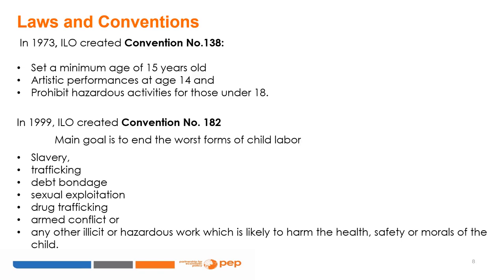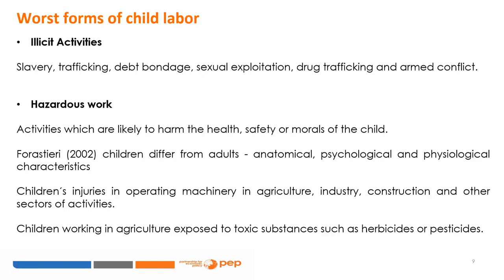Another important convention, ratified by all 187 countries that are members of the UN's International Labour Organization, was Convention No. 182, created in 1999. Its main goal was to end the worst forms of child labour around the globe, including slavery, debt bondage, sexual exploitation, the use of children in drug trafficking and armed conflict, or any other illicit or hazardous work likely to harm the health, safety, or morals of a child. Besides illicit activities, it is difficult to classify other activities as hazardous, since children can face hazards in the most common types of work.